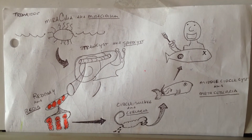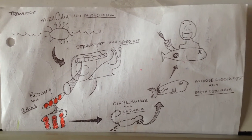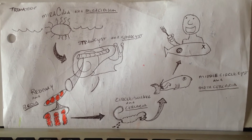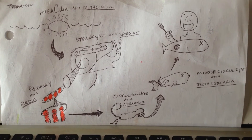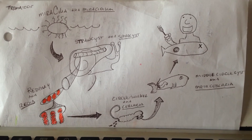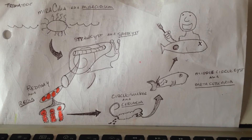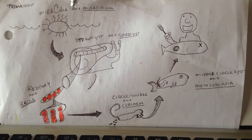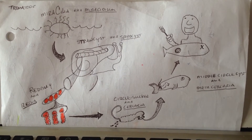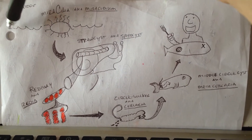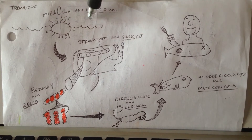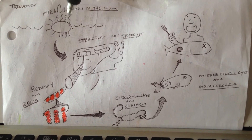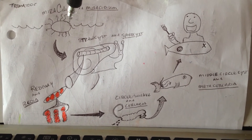So it seems like the trematode lifecycle is fairly important — it's got about six slides, so here's what I came up with. You start off with the Miracilia, aka Miracidium, and that's a freshwater stage, so you've got this water here, and there's a bunch of cilia on the Miracidium, so you'll see the cilia there.